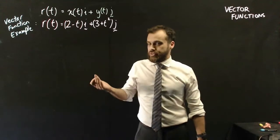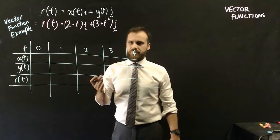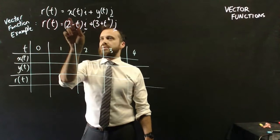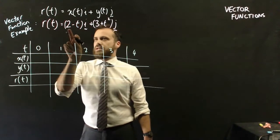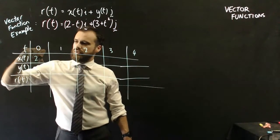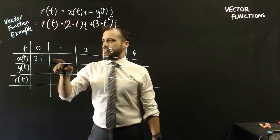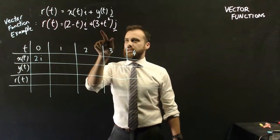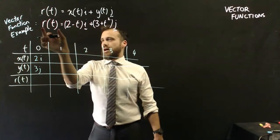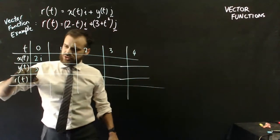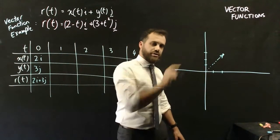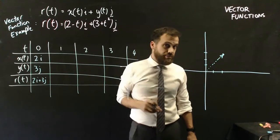We can create a table of values — similar to what you did in year 8 and 9 when graphing linear or quadratic equations. At time 0, the x component is 2 minus 0, which is 2, so we get 2i. The y component is 3 plus 0 squared, which is 3, so we get 3j. That means r(0) equals 2i plus 3j. There's our first point at time 0.